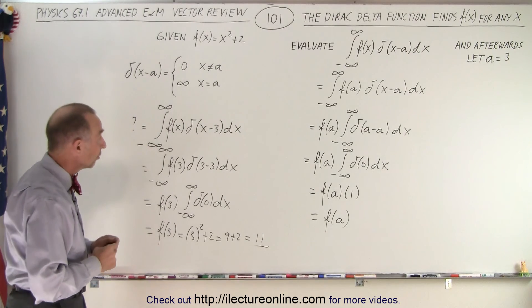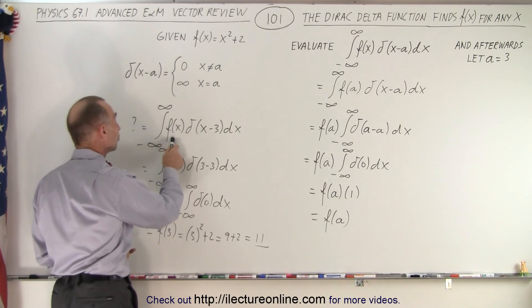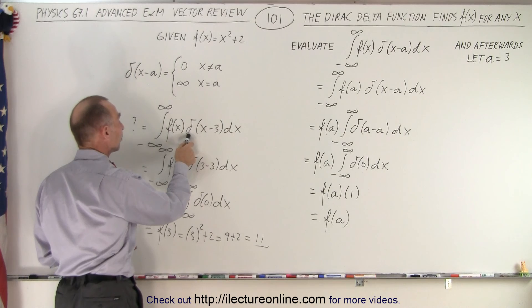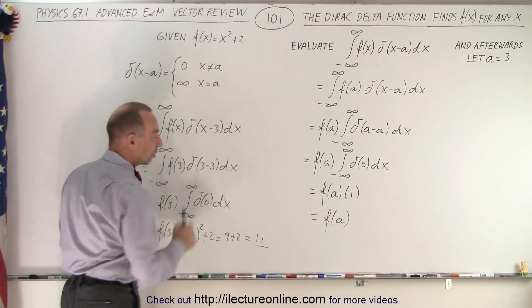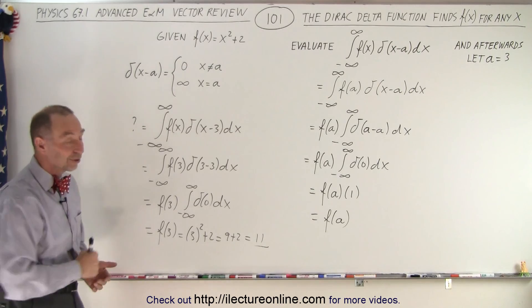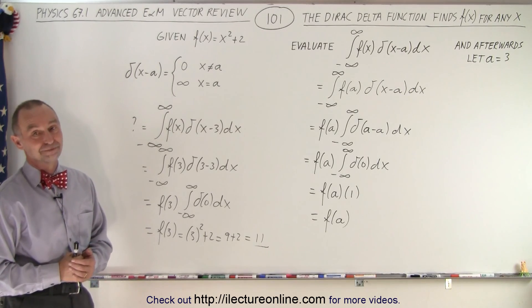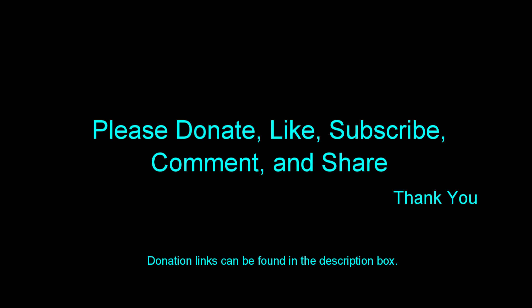So the result of taking this integral of the function multiplied by delta of x minus 3 equals 11. That is how it's done. Thank you.